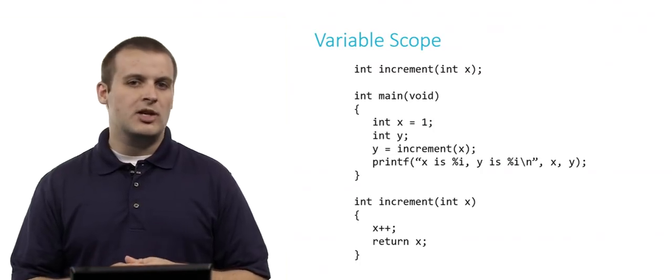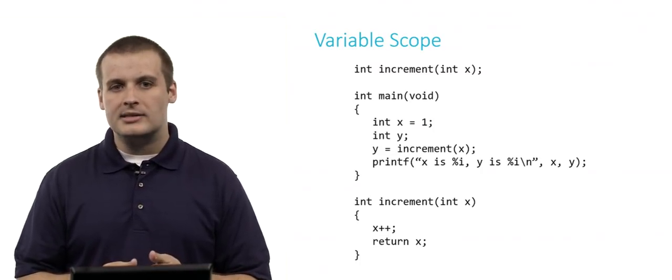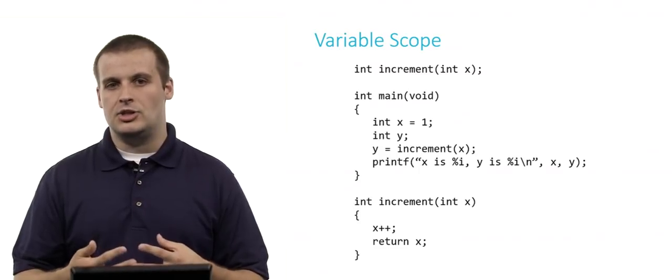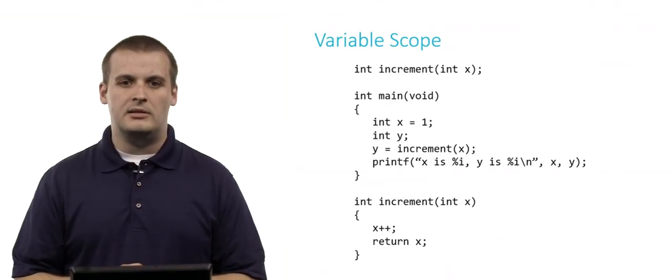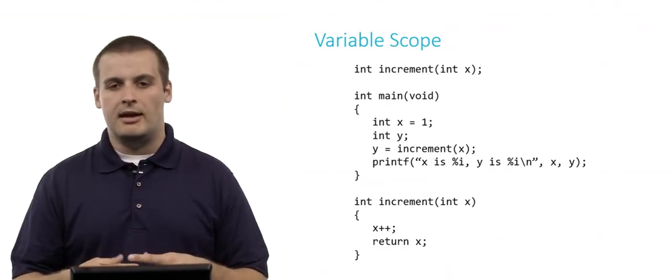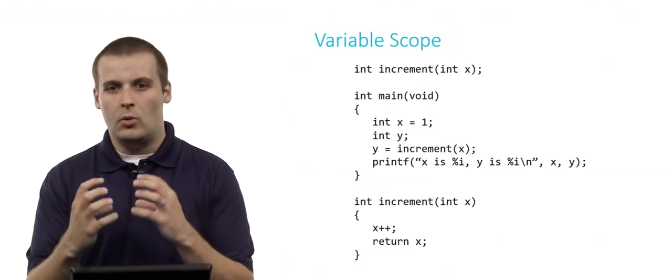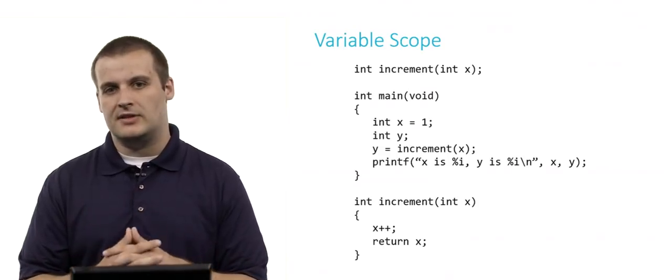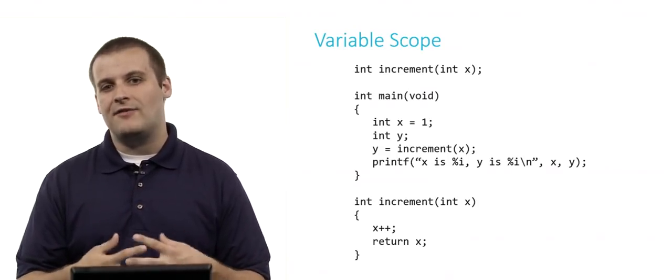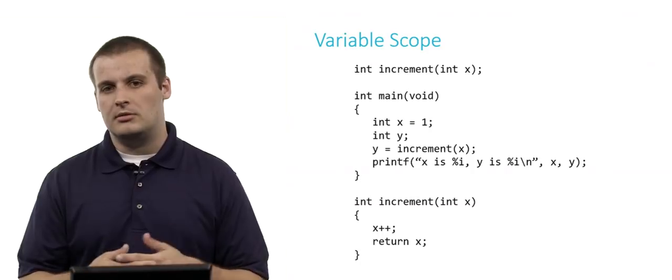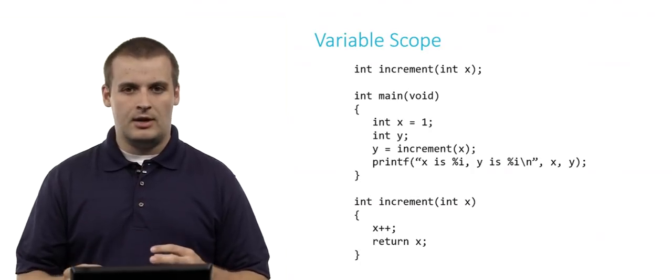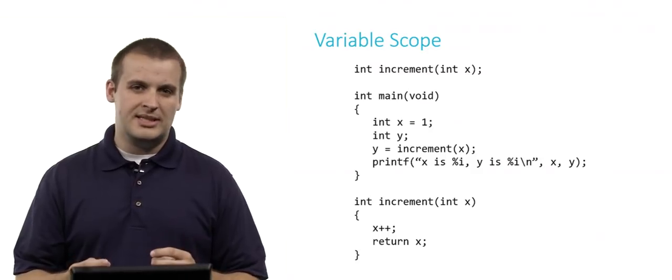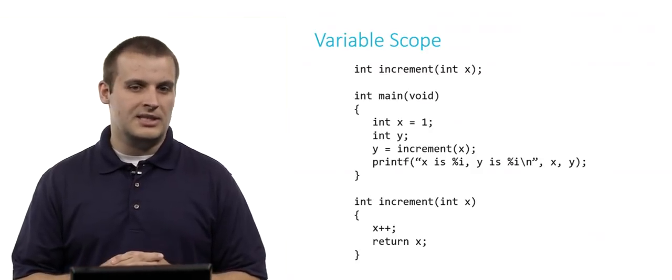You can see at the top we have a function declaration for a function called increment. That function takes a single parameter, an integer, which we call x, and it outputs an integer. That's the return type at the beginning. Then we have main, a couple of lines of code in main, the last of which is a print statement. And remember, that's the question here. What is actually going to be printed at the end of this function? And then we actually have the definition of increment below. So take a minute, step through the code, trace things out. Do you know what will be printed at the end of this particular program?